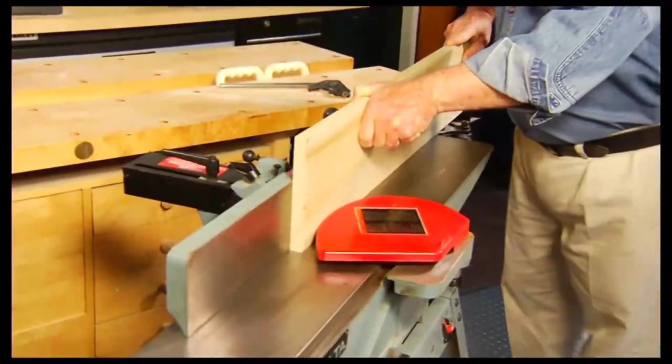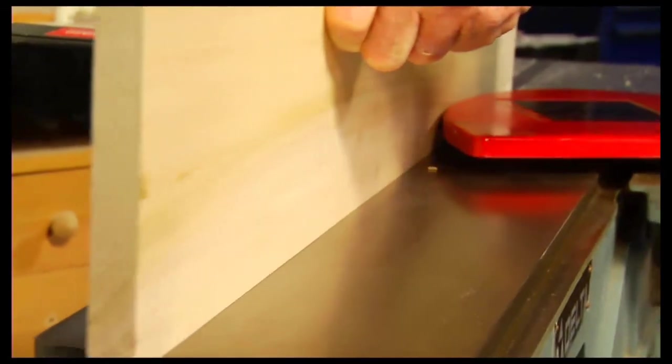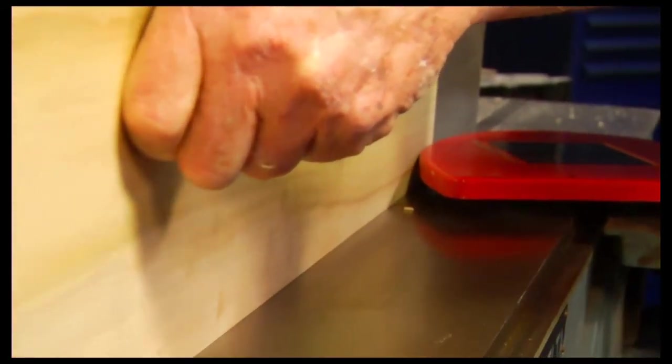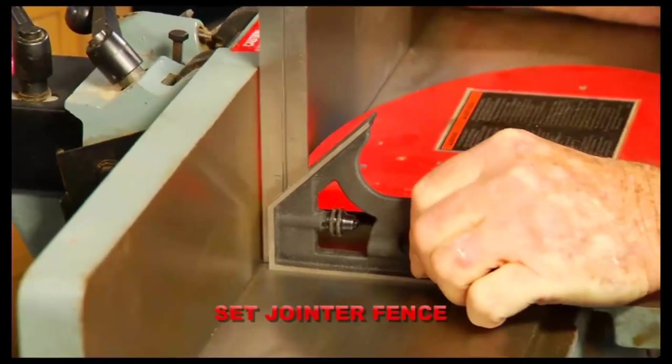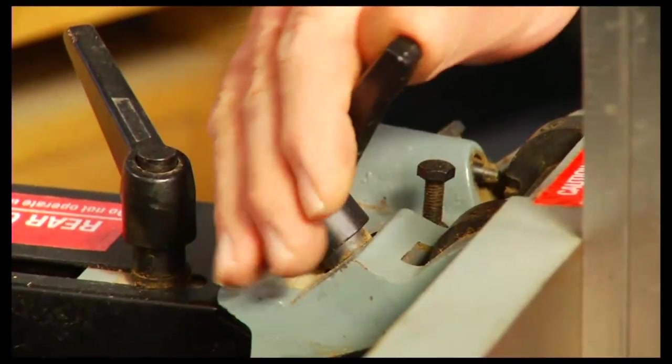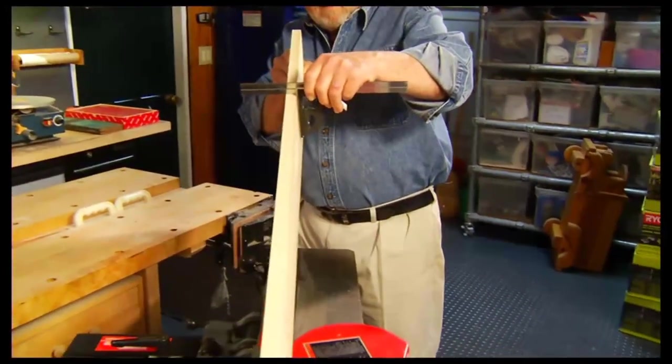One of the jointer's primary tasks is to create smooth, straight edges perfectly perpendicular to the face of a board. The combination square is used as a guide to set the fence and as a gauge to verify that the edge is, in fact, square.